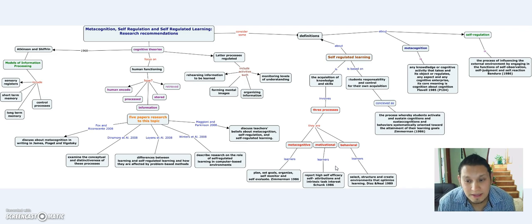Talking about behavior, learners select, structure, and create environments that optimize learning, according to Zimmerman and Pons in 1989. These processes help realize how self-regulated learning appears to control the way students learn.